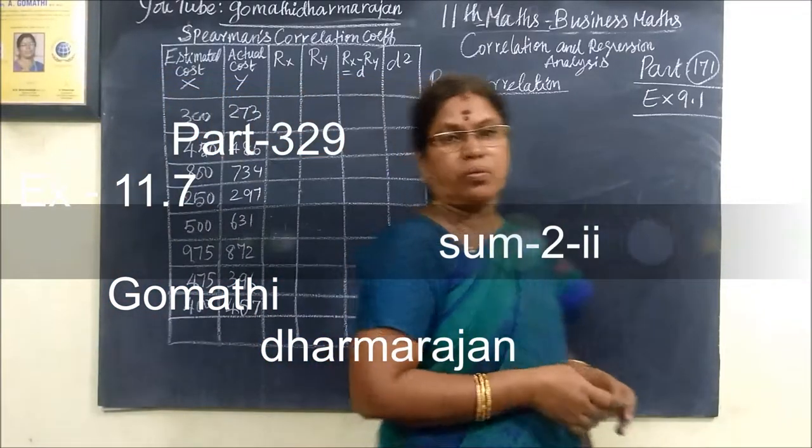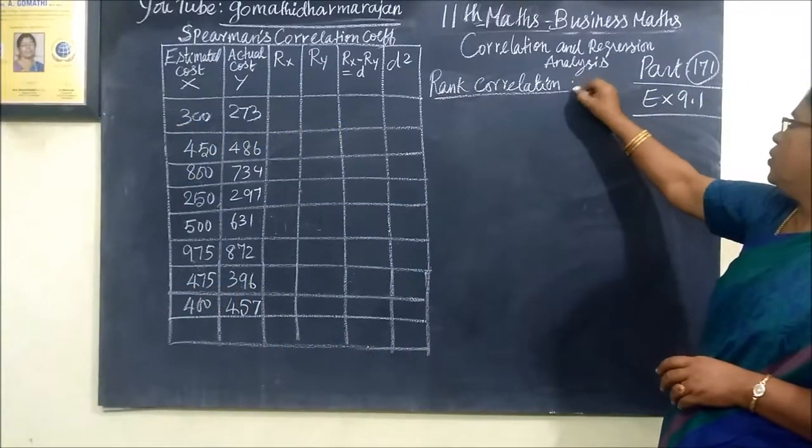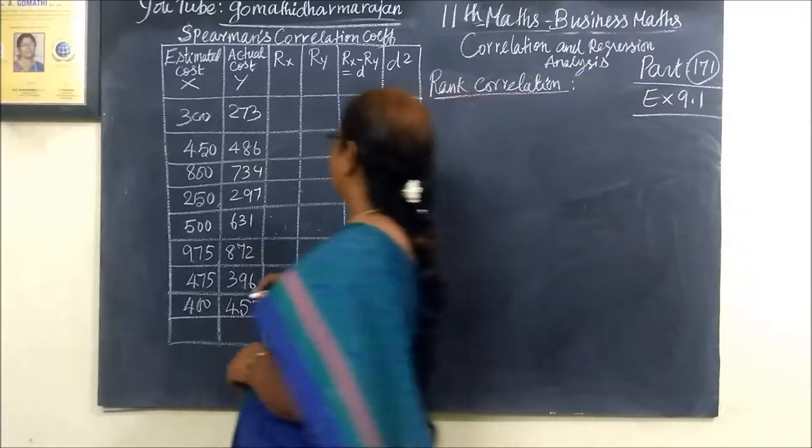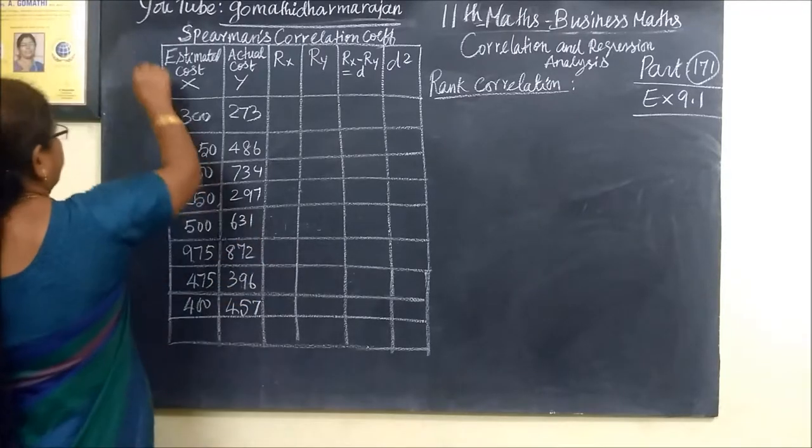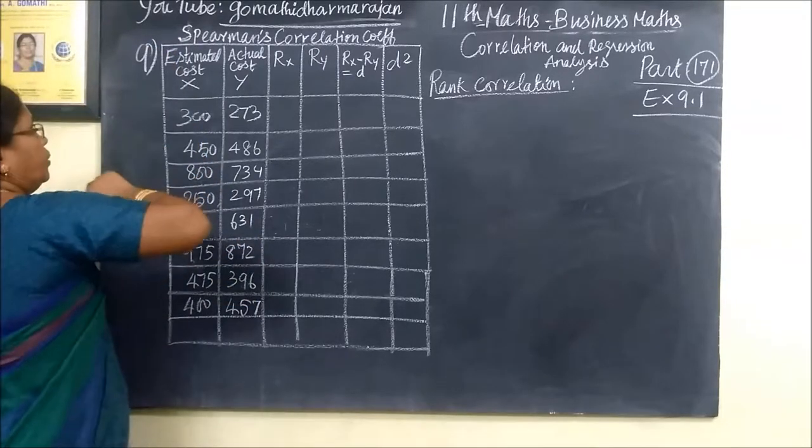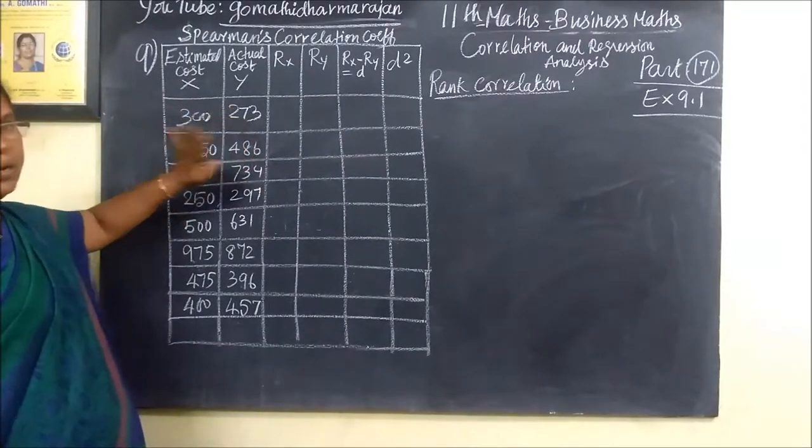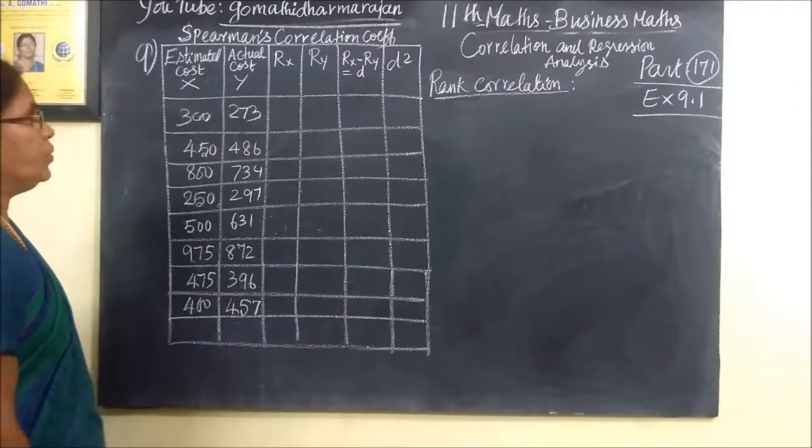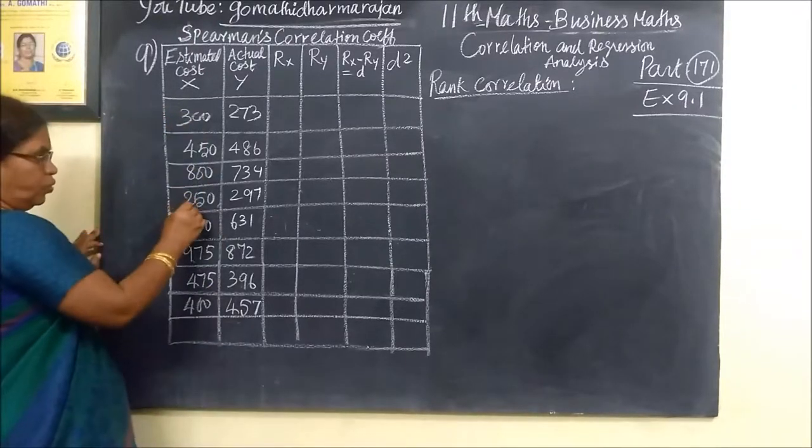Good evening students. Now we want to see part 171, real calculation part two. Last class was 170. Here there is example 9.1. We are seeing which question - question number 10, not 10, question 9. So you have given estimated cost and actual cost. The actual cost versus estimated cost. Here is the rank, here is the rank. Which is 250?